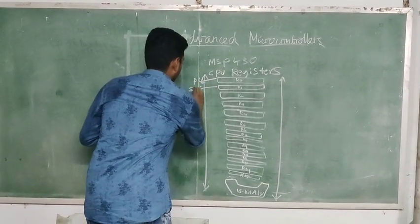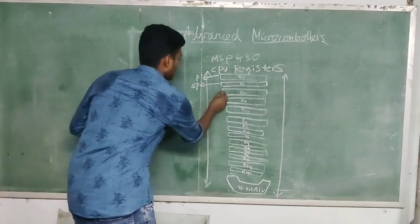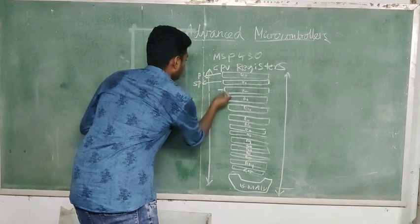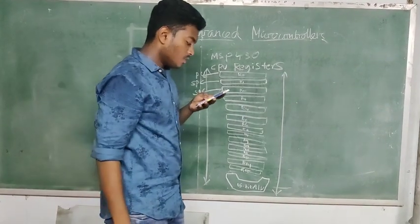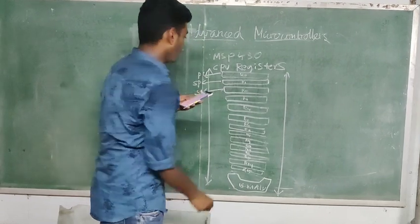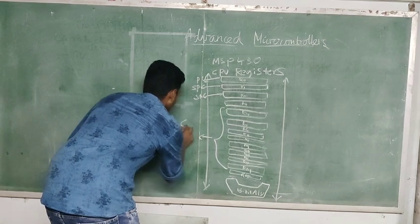R2 serves as the status register. Register R2 serves as the status register. Now, while the remaining registers R4 to R15 are used for general purpose.